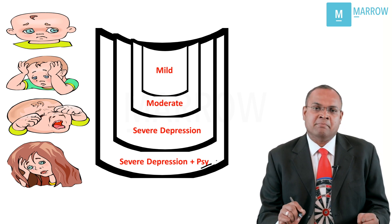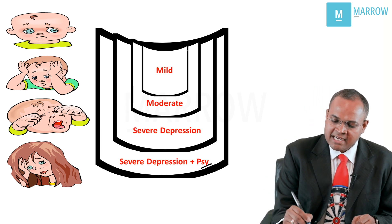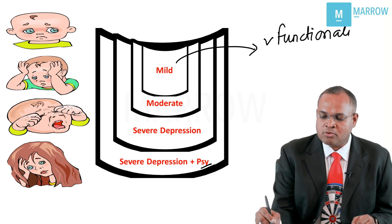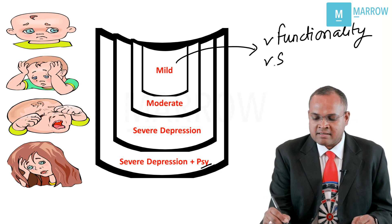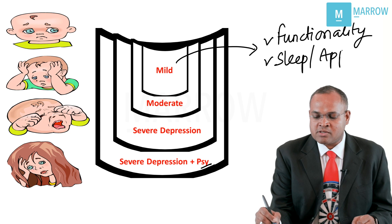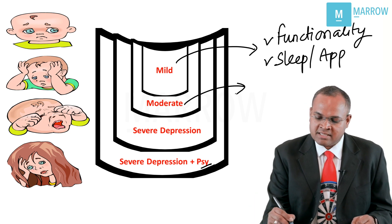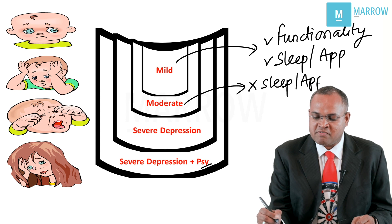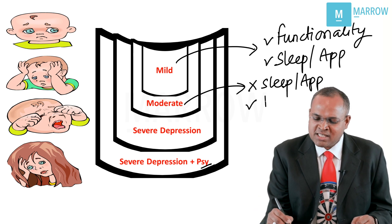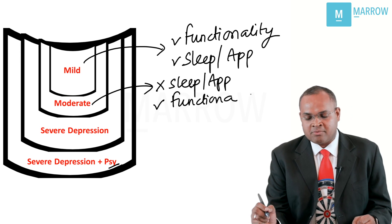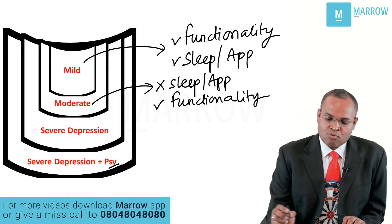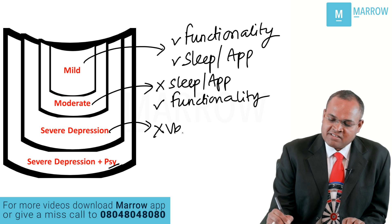In mild depression, functionality is pretty much fine — they are able to do their jobs and roles well, and the vegetative symptoms like sleep and appetite are also largely intact. In moderate depression, sleep and appetite problems appear — the vegetative symptoms have gone for a toss — but functionality is still okay; they can go to work and maintain routines. In severe depression, both vegetative symptoms and functionality have gone for a toss.